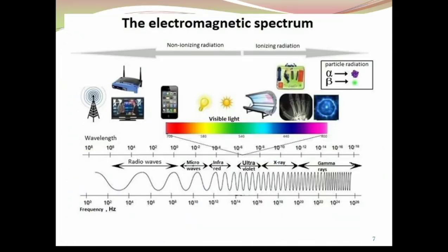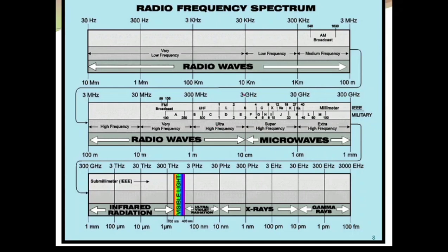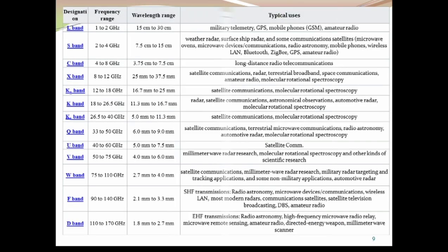Now we will look at the detailed picture of the frequency range. The spectrum starting from 3 megahertz to 3 gigahertz is called radio waves — signals radiating from a channel or conductor. After radio waves, we have microwaves, whose frequency range starts from 3 gigahertz to 300 gigahertz. Within this range, we have many classifications of frequency bands, which we will discuss in the next slide.